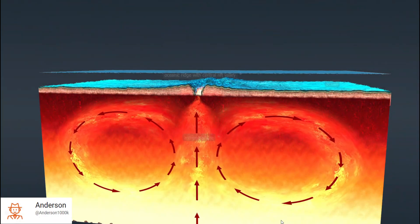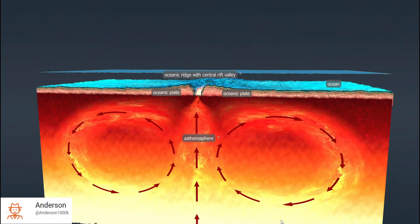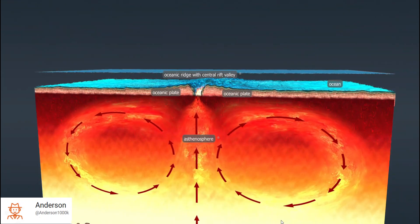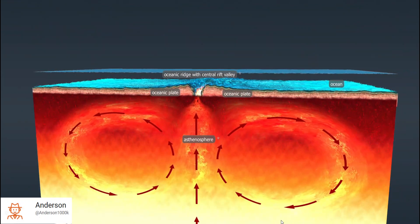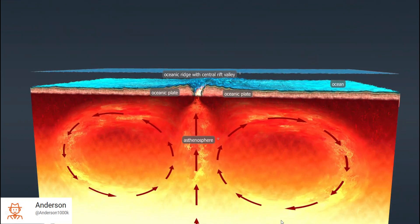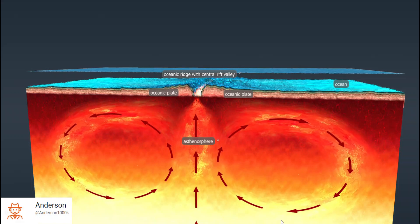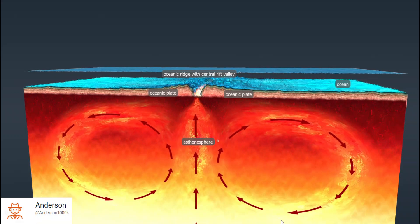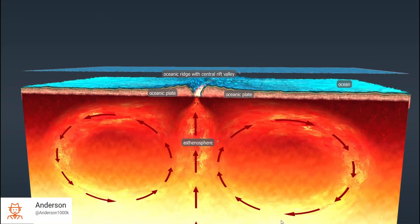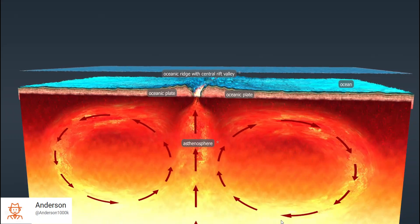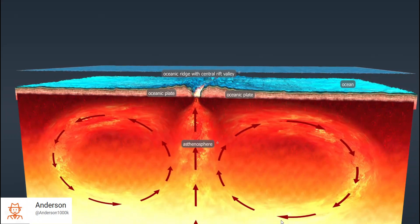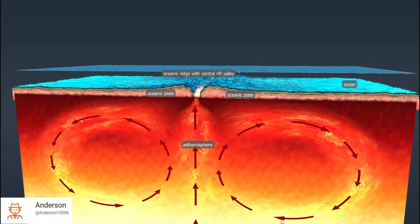The theory that describes the motion of the lithosphere is called plate tectonics. There are three types of tectonic movement: convergence, divergence, and subduction.